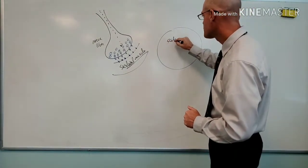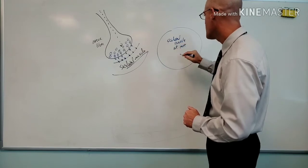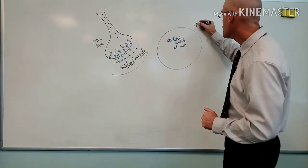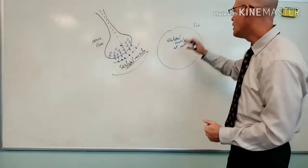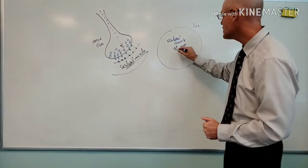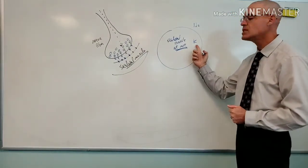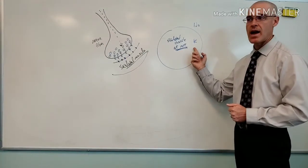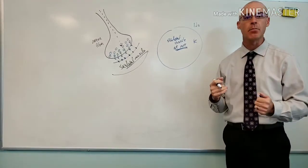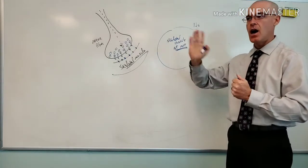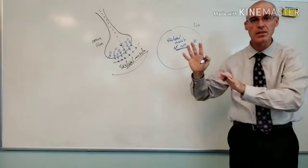At rest, skeletal muscle has sodium predominantly outside the cell and potassium predominantly inside the cell. The sodium-potassium pump is constantly pumping sodium outside and potassium inside, keeping them in their relative locations.